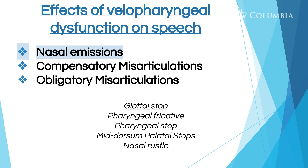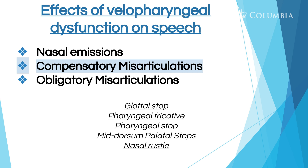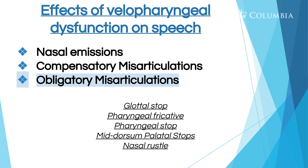Velopharyngeal dysfunction can lead to nasal emissions — so that would sound like when someone's saying 'sun' and it sounds like 'pfft.' Compensatory misarticulations are errors that are learned from having a faulty mechanism. Examples include glottal stops, pharyngeal fricatives, pharyngeal stops, mid-dorsal palatable stops, and nasal rustles. There are also obligatory misarticulations — errors caused by a structural or physiological reason — and those aren't corrected through therapy; those are corrected through surgery.